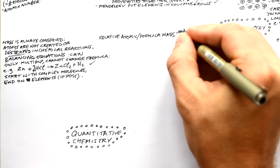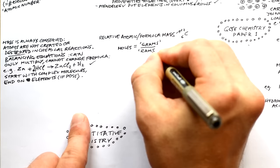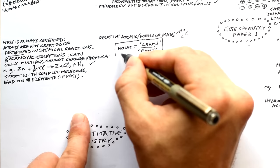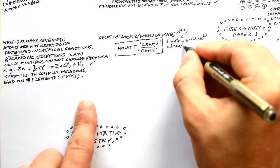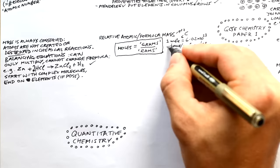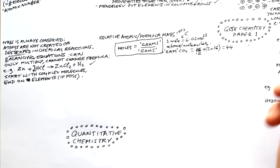Relative atomic mass (RAM) comes from the mass number of an element. A mole is 6.02 × 10²³ atoms or molecules. Moles = grams ÷ RAM. The mass number of an atom tells you how many grams one mole of that substance weighs — a mole of carbon weighs 12 g. For relative formula mass, add up all the atomic masses: CO₂ is 12 + (2 × 16) = 44, so one mole of CO₂ weighs 44 g.